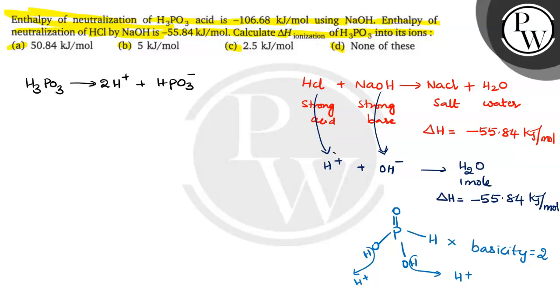So, for 1 H plus, see here 1 H plus, this delta H value is minus 55.84. So, there are how many H plus ions? 2 H plus ions. So, therefore, 2 into 55.84 kilojoules.